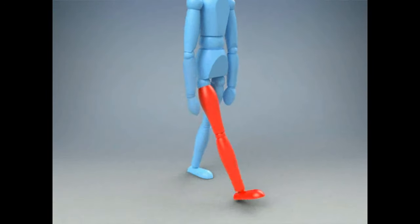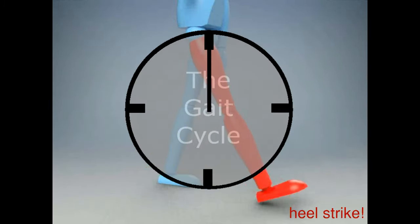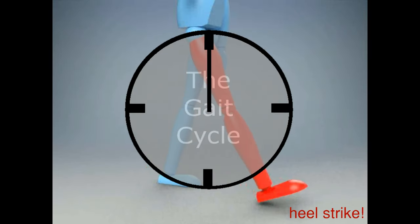Instead of steps or seconds, we measure time in terms of the gait cycle, which is a complete stride with the reference limb, measured from one heel strike when the foot first touches the ground to the next time the foot hits the ground.